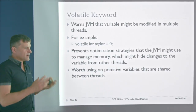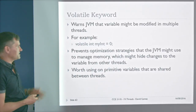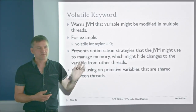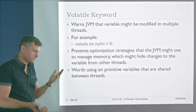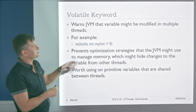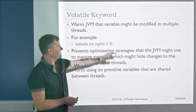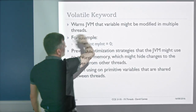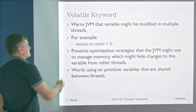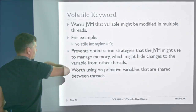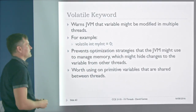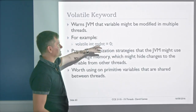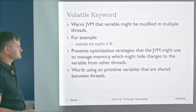Atomic actions aren't entirely safe either, because the JVM may use caching strategies that hide variable changes from other threads — particularly relevant for boolean stop-thread flags. To address this, use the volatile keyword: declaring volatile boolean runThread tells the JVM that the variable may be modified by multiple threads, ensuring all threads see a consistent state.